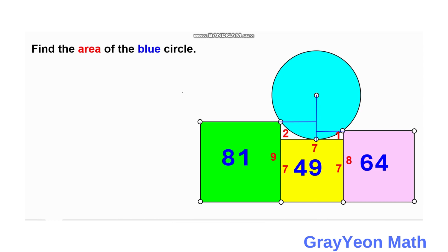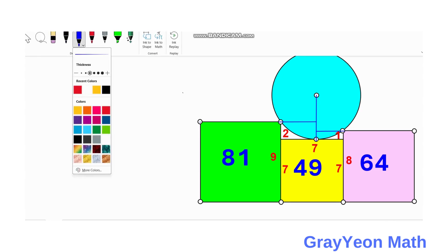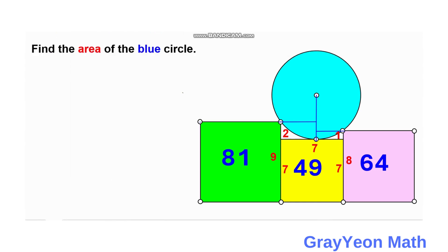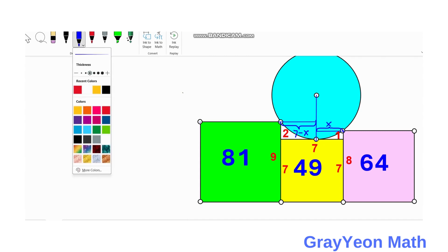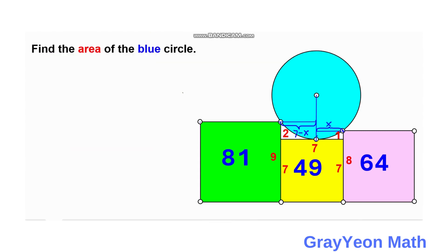Next, we focus on the horizontal lengths. For the horizontal length of the yellow square, it is 7. We let the left portion be x, so the remaining portion is 7 minus x. We note that these lines are perpendicular to the square — this one is perpendicular, and this one is also perpendicular.